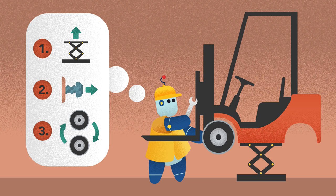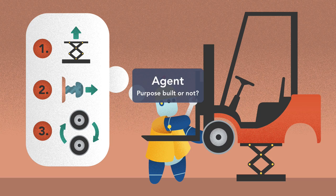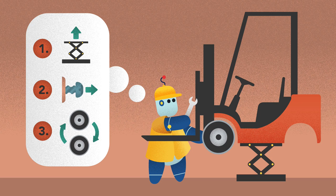It performs a task. A forklift in a warehouse performs many tasks, like picking up, dropping off, navigating, recharging, etc. Whereas a spam detector, as the name suggests, only detects spam in email. Further definition of a task versus subtask is not needed.